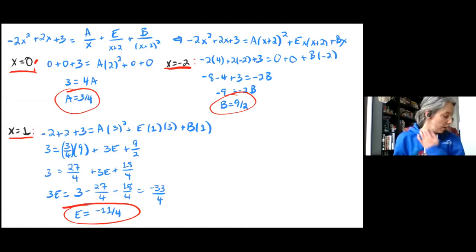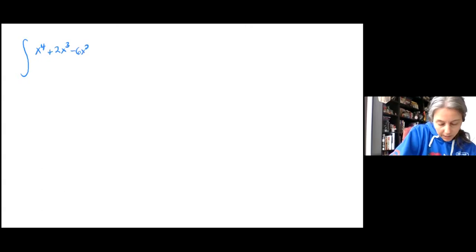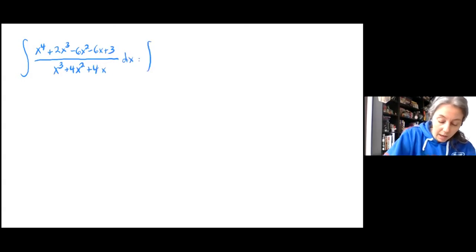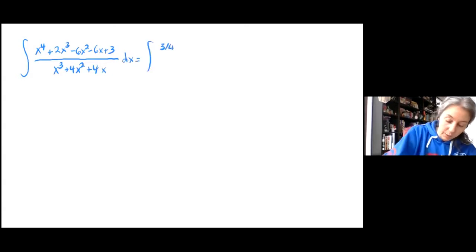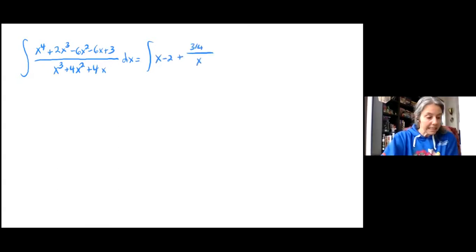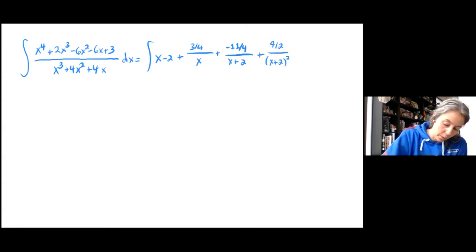Now I have all of my numerators, so I just need to rewrite the integral. The original integral of (x to the 4th plus 2x cubed minus 6x squared minus 6x plus 3) over (x cubed plus 4x squared plus 4x) dx equals the integral of x minus 2 plus (3/4) over x plus (negative 11/4) over (x plus 2) plus (9/2) over (x plus 2) squared dx.